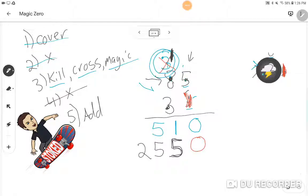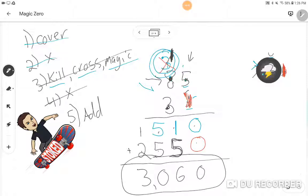We just multiplied, so that step is over. And now we're just going to add. 0 plus 0 is 0. 1 plus 5 is 6. 5 plus 5 is 10. Carry the 1. 2 plus 1 is 3. The answer is 3,060. Let's go to page 3.